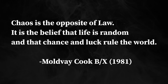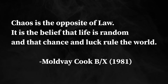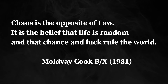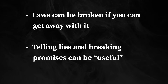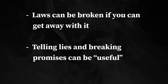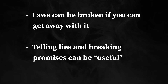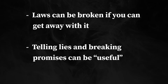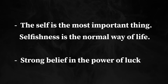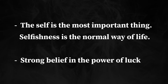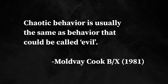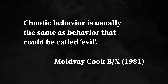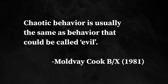On the other hand, chaotic behavior is described as: 'Chaos is the opposite of law. It is the belief that life is random and that chance and luck rule the world.' Chaotic behaviors include: laws can be broken if you can get away with it, telling lies and breaking promises can be useful, the self is the most important thing, selfishness is the normal way of life, and a strong belief in luck and random chance. The section concludes that chaotic behavior is usually the same behavior that could be called 'evil.'